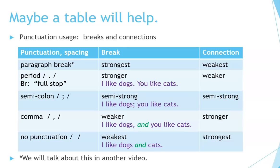The next one is a semicolon. It sits between a period and a comma — you see the period at the top of the punctuation mark and the comma just below it. I like to call it semi-strong because it's in the middle. For example: I like dogs; you like cats. There's a separation, but it's not as strong as the break with a period.